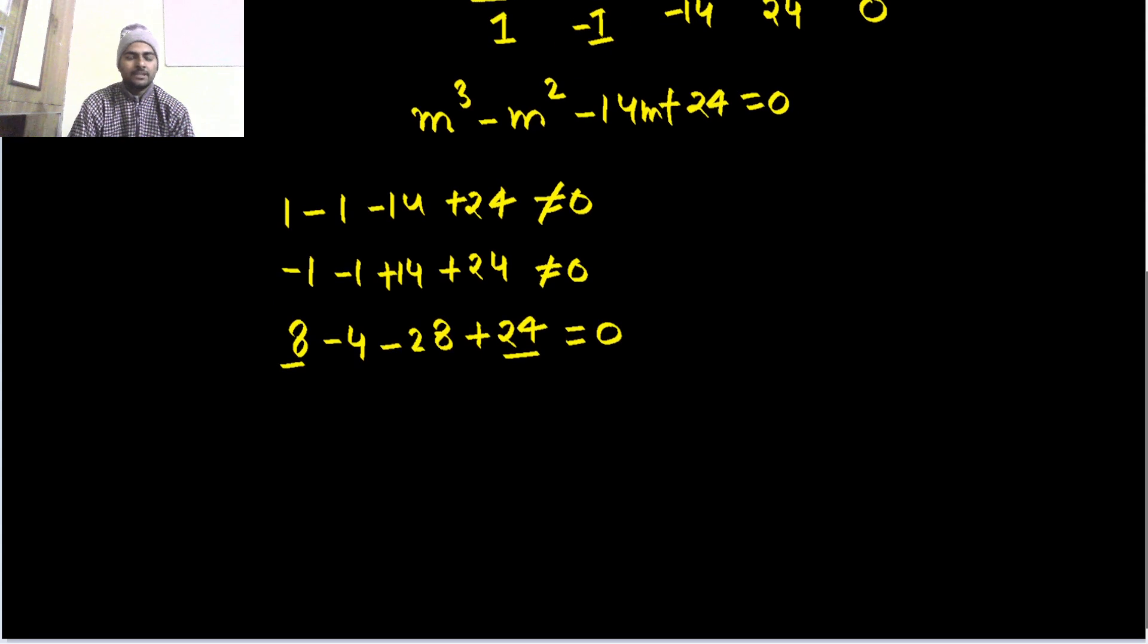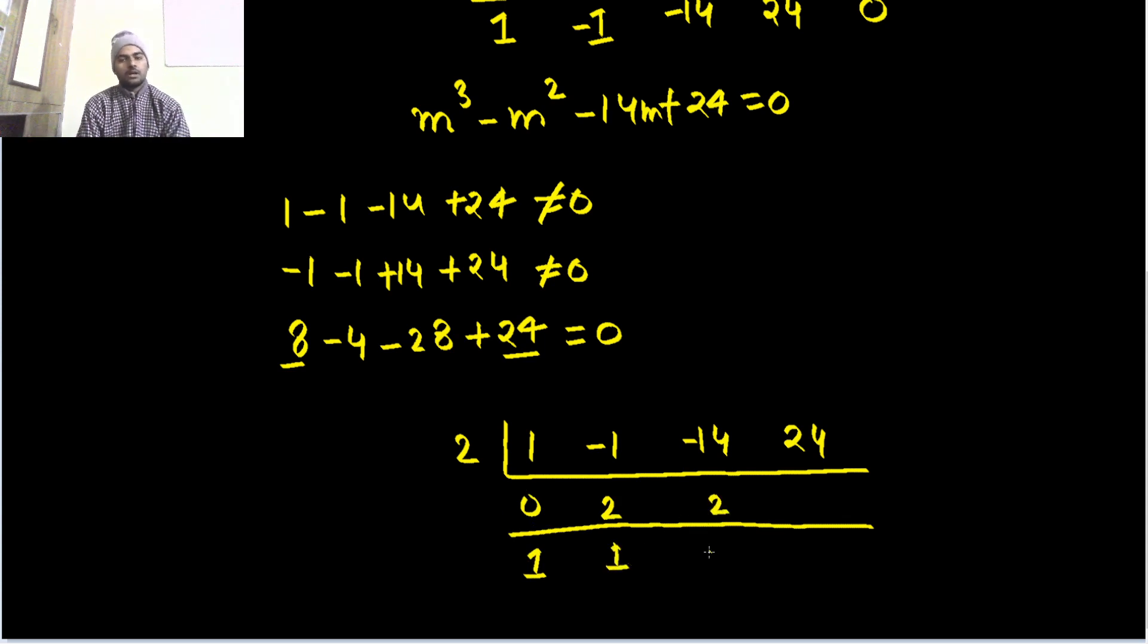Again move ahead. Write 2 here, and write the coefficients of this cubic equation: 1, -1, -14, 24. Write 0 here. Multiply: 1 × 2, 1 × 2, then -12 × 2.